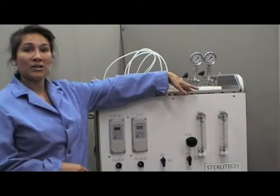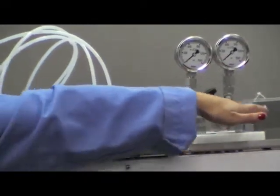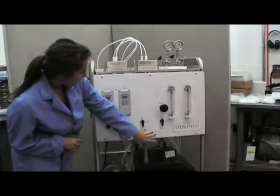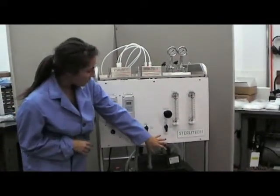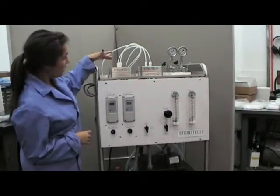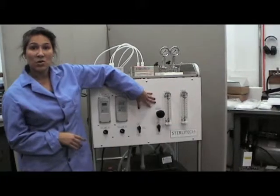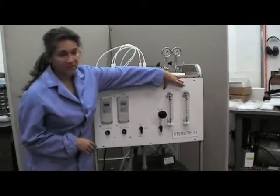Over here we have your back pressure control valves and they're also marked for line one and line two. Over here you'll see the two line switches for line one and line two. Your bypass or brine valve as well as the flow meters.